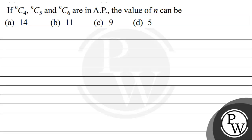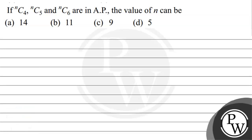Hello, let's read this question. The question says that if NC4, NC5, and NC6 are in AP, then the value of N can be.